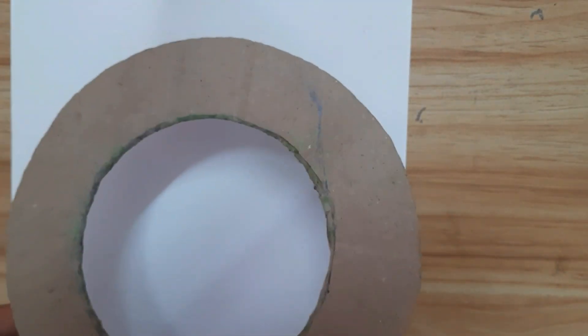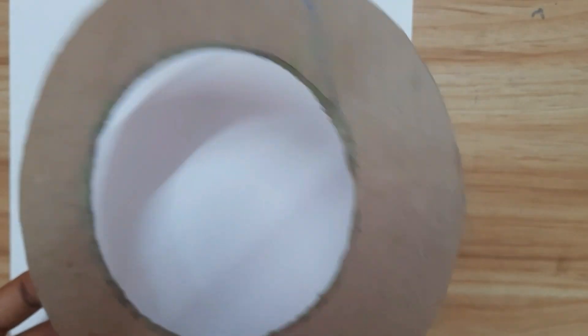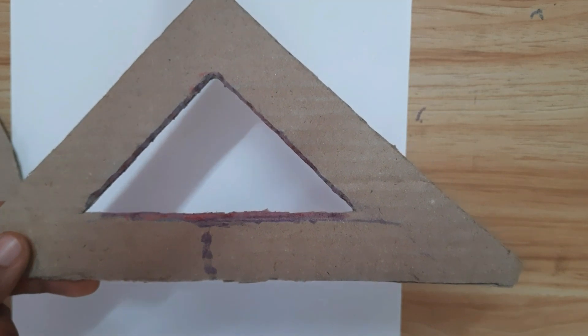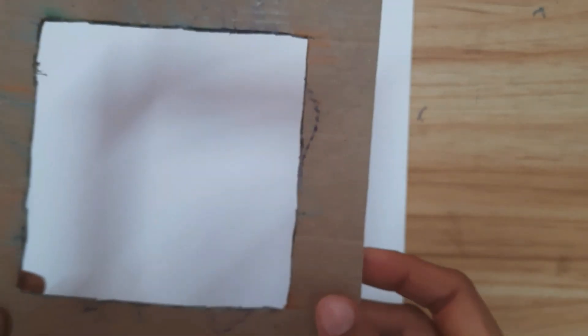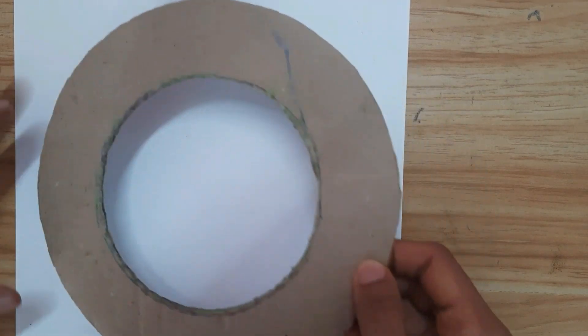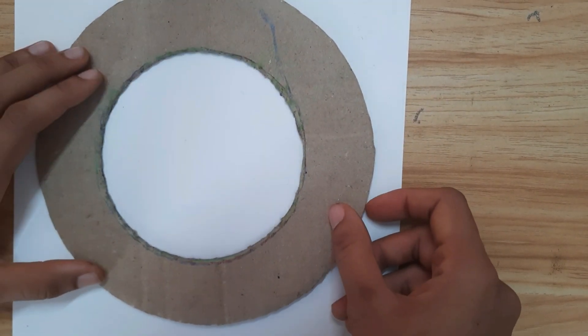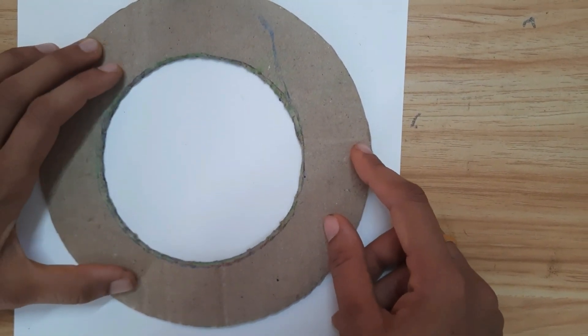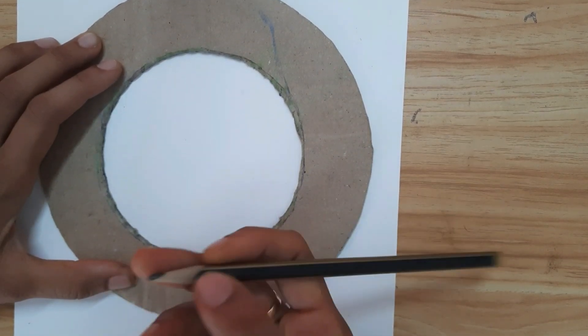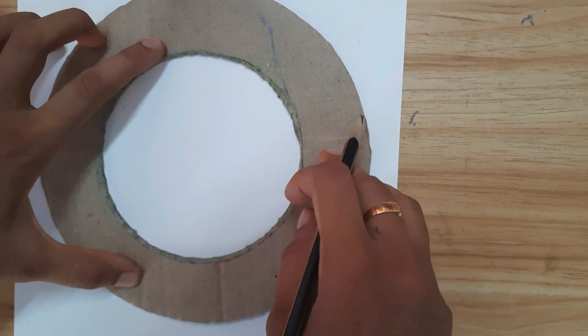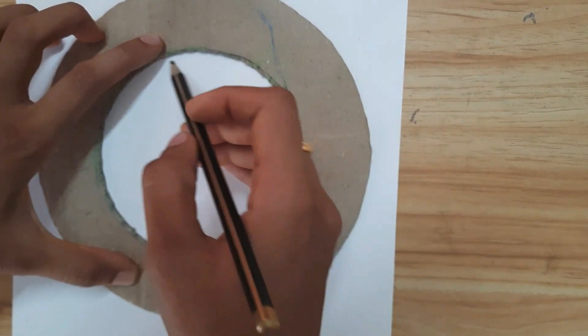Let's take the circle and place it on the paper. Take a pencil or pen or a sketch pen, or anything of your choice.